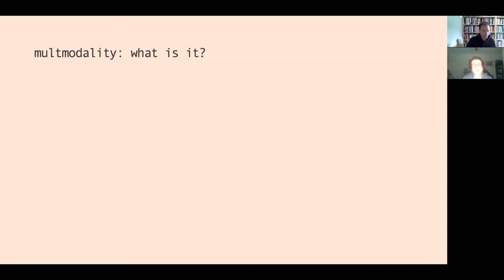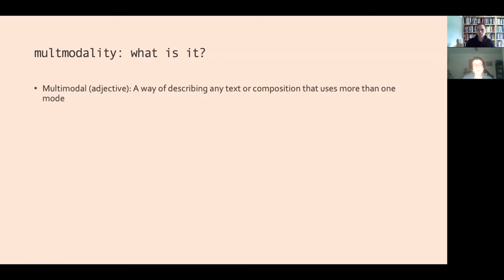In terms of the idea of multimodality, we might begin with what it is and how we might understand it. At one level, the adjective 'multimodal' is a way of describing any text or composition that uses more than one mode. As soon as we ask what a mode is, things get a little more complicated.